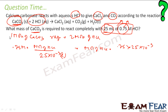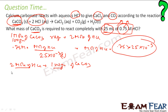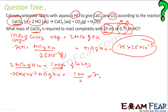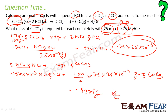Since 1 mole of CaCO3 requires 2 moles of HCl, and 1 mole of CaCO3 is 100 grams, 2 moles of HCl requires 100 grams of CaCO3. I have 0.75 × 25 × 10⁻³ moles of HCl, so the mass of CaCO3 = (100/2) × 0.75 × 25 × 10⁻³ = 0.9375 grams. Very simple.